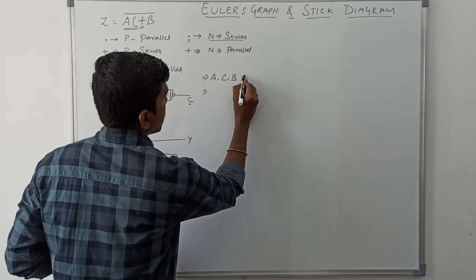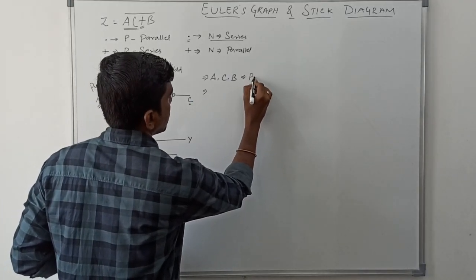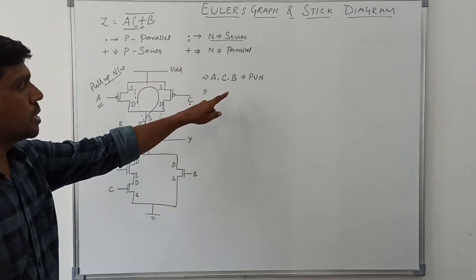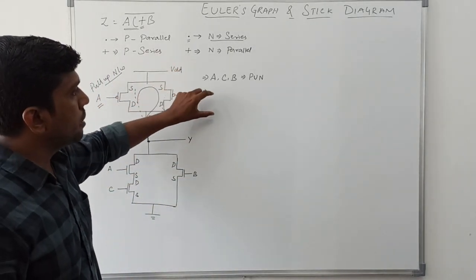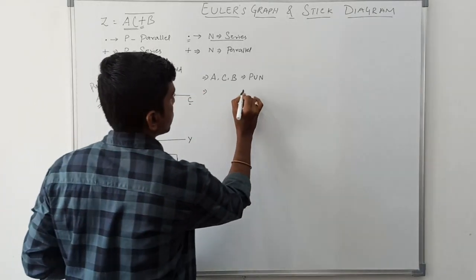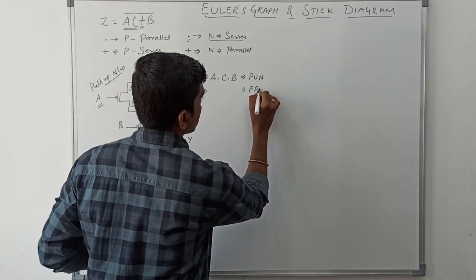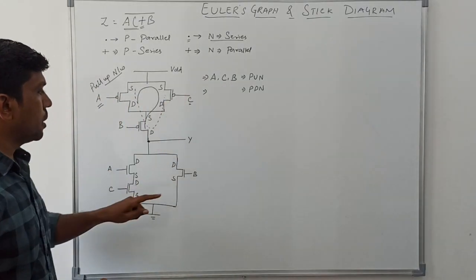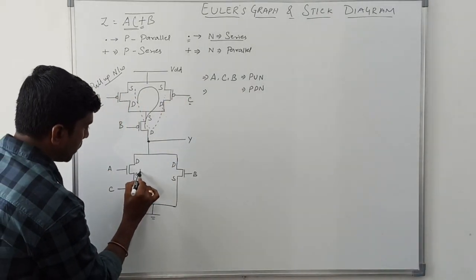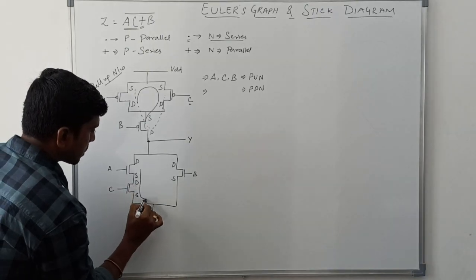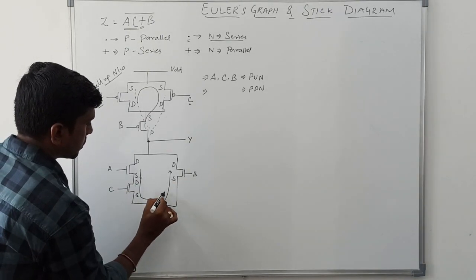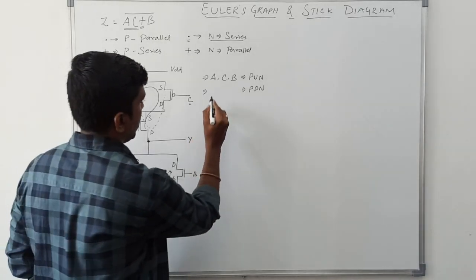The pull-up network Euler path is A, C, B. The same order we should follow in the pull-down network — so A, C, and B as well.